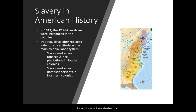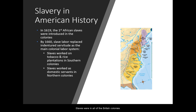Many people started taking advantage of those indentured servants, extending their time frame so they were essentially indentured for life. A lot of people stopped taking that option, so colonists had to find another way to get their work done, and they implemented slave labor. By the mid-17th century, that became the main colonial labor system — and it's important to understand this was not only in the southern colonies. Slaves were in all of the British colonies. In the south they worked on tobacco and rice plantations, and in the north they were domestic servants.